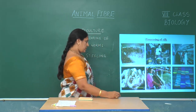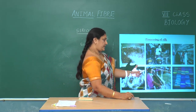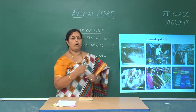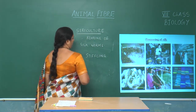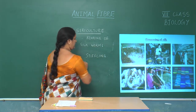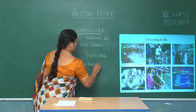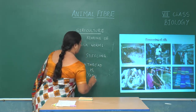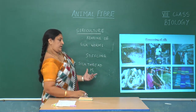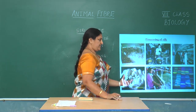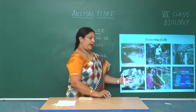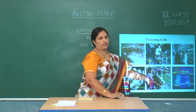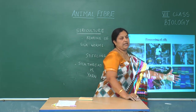The cocoons after boiling are sent into reeling units where 3 to 8 silk fibers are woven into silk threads or yarn. This yarn produced in the reeling unit is then cleaned, bleached, and dyed, giving it a permanent coloration. The dyed fibers are then sent into the weaving units where the production of silk fabric is done.